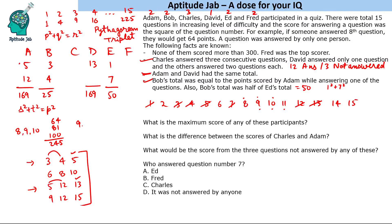If we take 9, 10, 11, the total is 81 + 100 + 121 = 302. But none of them scored more than 300, so this is not possible. Therefore, Charles answered 8, 9, 10, and his score is 245.